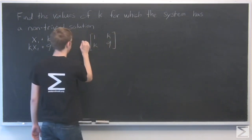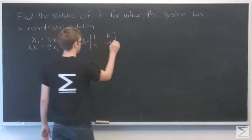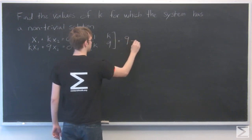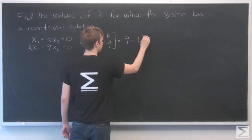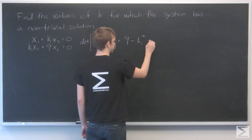So the determinant, that's equal to 9 minus k squared. Now we just set that equal to 0.